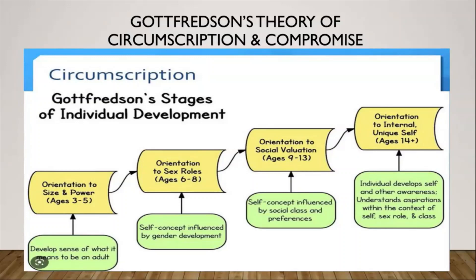Hopefully you've gotten out of this stage, but at this stage children start to understand that you can't grow up to be a fantasy or cartoon character like SpongeBob or Patrick or some other cartoon character. The next stage is the orientation to sex roles or gender roles, and based on this theory you go through this stage between the ages of six to eight.